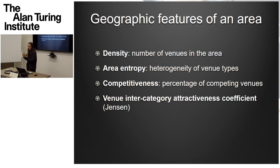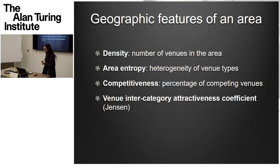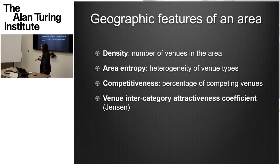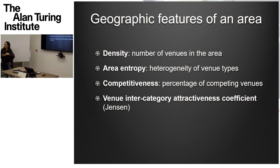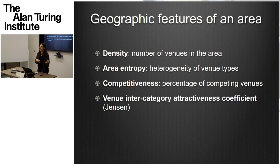The geographical features are: density — how many places are around the area where I want to put the shop; area entropy — how heterogeneous is the selection of venues; competitiveness — how many other Starbucks are nearby; and the Jensen coefficient — how much does the train station contribute to the Starbucks in the area. We looked at what proportion of the categories that most contribute to this type of venue are present in the area.